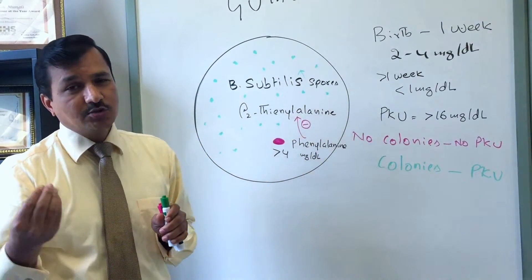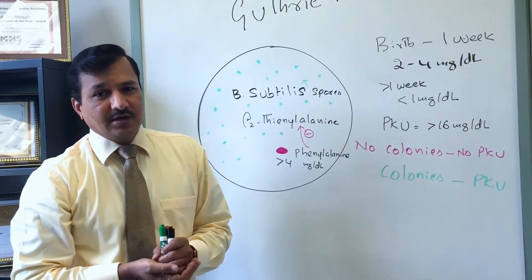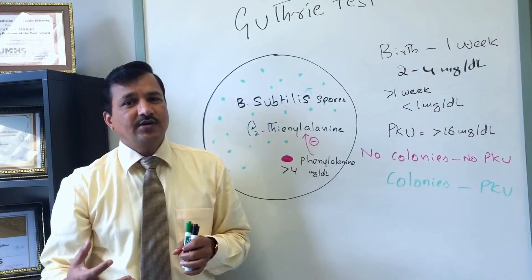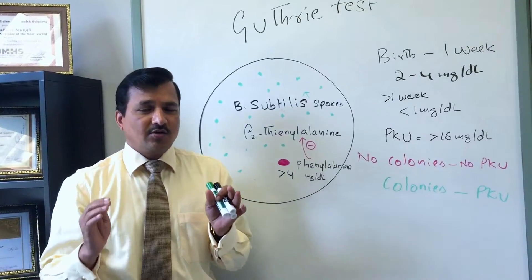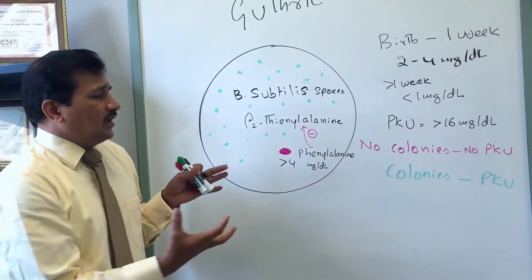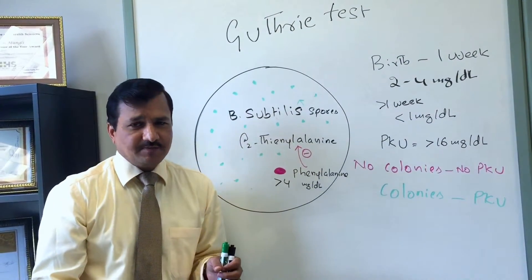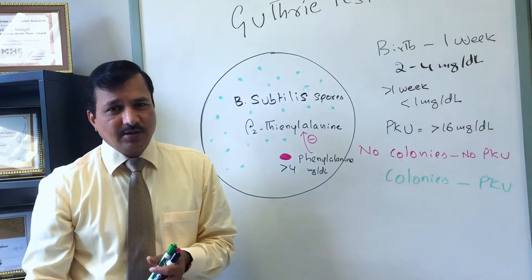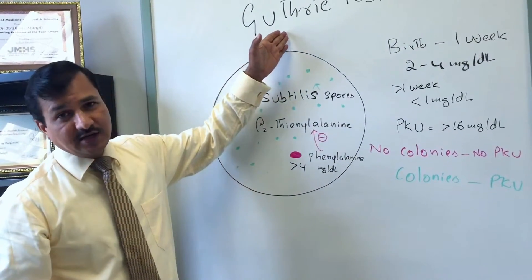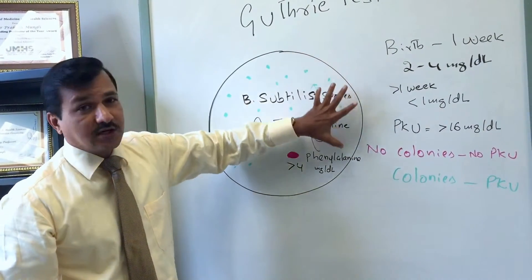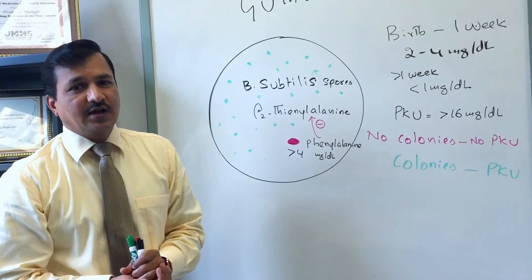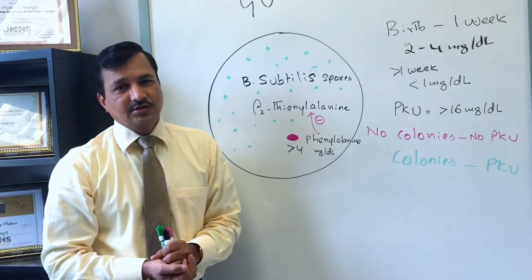Any Guthrie test that comes out positive should have that blood sample sent to higher laboratories for a confirmatory test. The confirmatory test is done using HPLC — high performance liquid chromatography — based methods, which estimate the exact amount of phenylalanine in the blood. If HPLC is available in the hospital it can be done directly, but if not, the Guthrie screening test is used first, and positive samples are then sent for HPLC-based direct quantitation of phenylalanine.